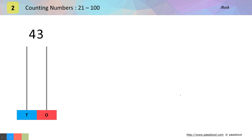So in number 43, we have 3 on the right hand side, so we will have 3 circles on the 1s line — here we have 1, 2 and 3 circles on the 1s line. And we have number 4 on the left hand side, so I will draw 4 circles on the 10s line — here we have 1, 2, 3 and 4 circles on the 10s line.